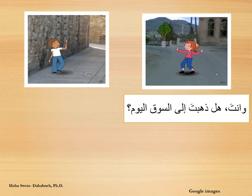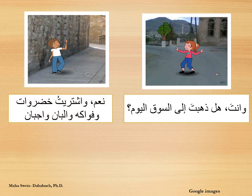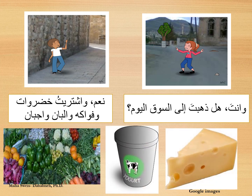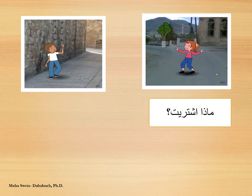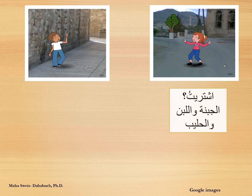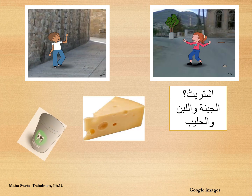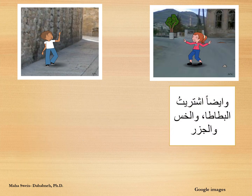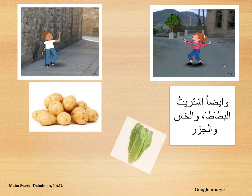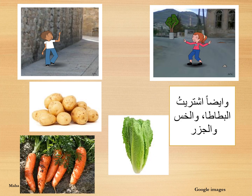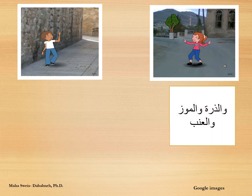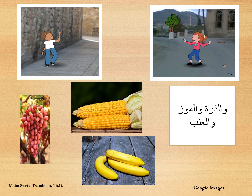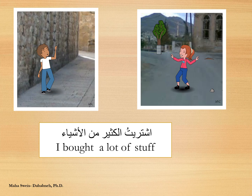وأنت؟ هل ذهبت إلى السوق اليوم؟ نعم، اشتريت خضروات وفواكه وألبان وأجبان. ماذا اشتريت؟ اشتريت الجبنة واللبن والحليب. وأيضاً اشتريت البطاطا والخس والجزر. والذرة والموز والعنب. اشتريت الكثير من الأشياء.